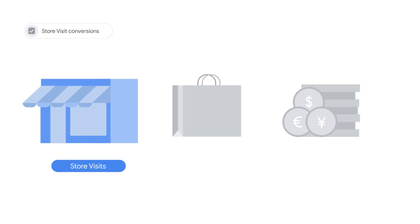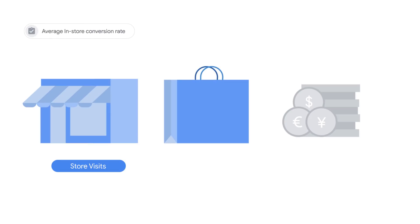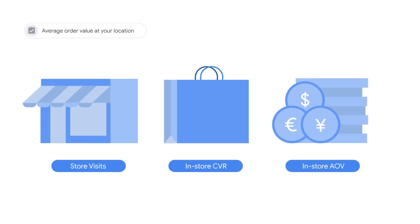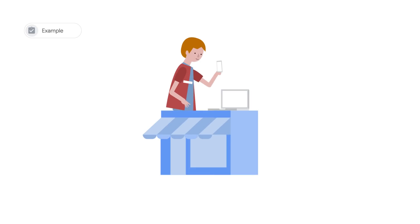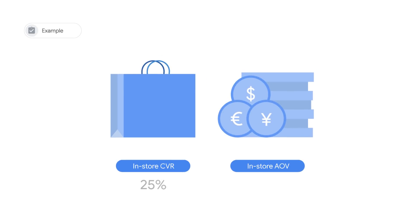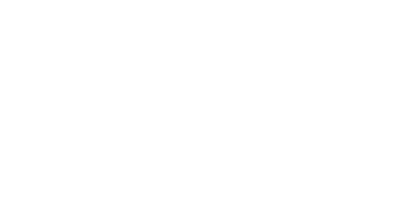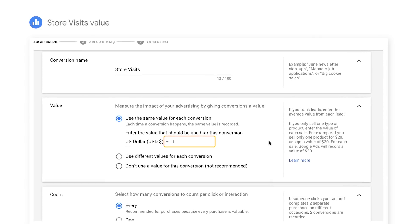To calculate this, you'll use your store visit conversions — a report automatically generated in Google Ads if you're eligible for store visits — your average in-store conversion rate (of the customers who visit your store after interacting with an ad, how many are likely to make a purchase?), and your average order value in-store (what is the average order size of an in-store purchase?). Work with your store manager to determine the best average in-store conversion rate and average order value in-store. To calculate the value of your store visit conversion, multiply the average in-store conversion rate by the average order value. This is the value that you'll add to your store visit conversion action.